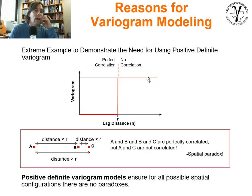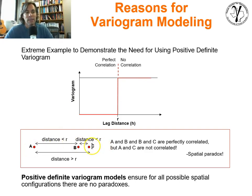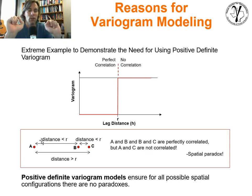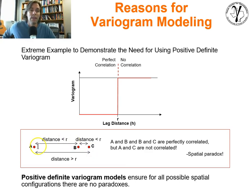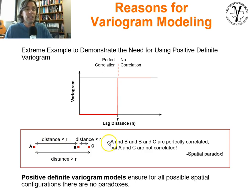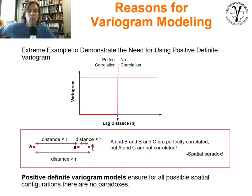Let's see if that works. I have data points A, B, and C. Data points A and B are at a distance separation less than r — just barely. Data points B and C are also at a distance less than r. But the distance between A and C is greater than r. So this model predicts that A and B are perfectly correlated, B and C are perfectly correlated, but A and C are not at all correlated with each other. That's a spatial paradox.